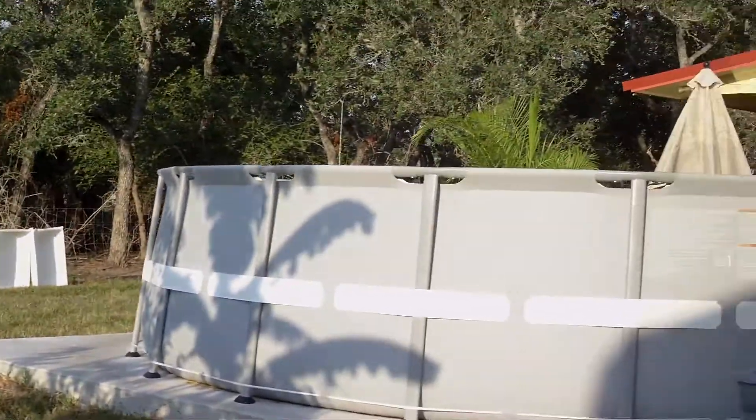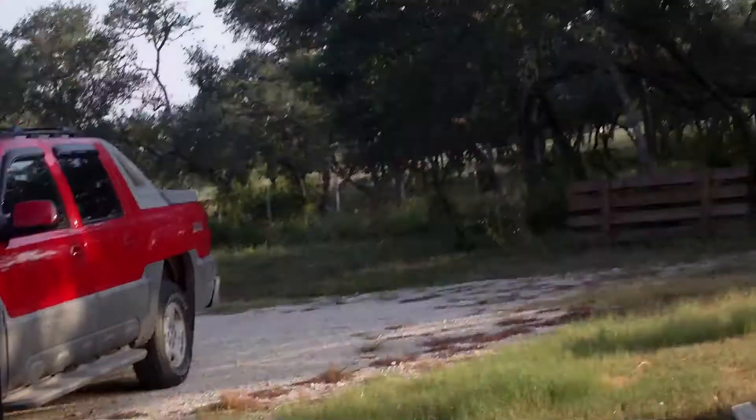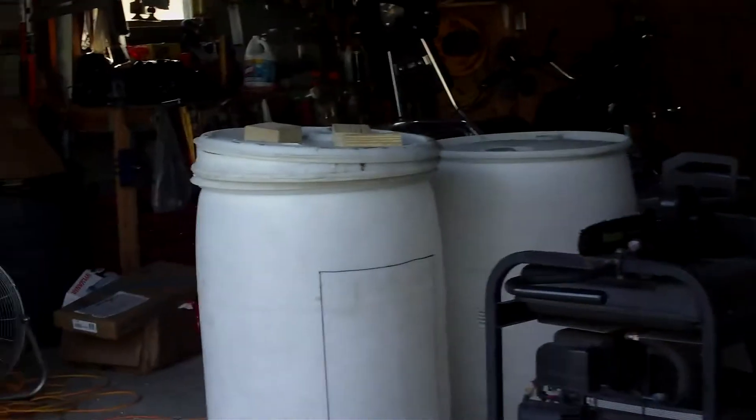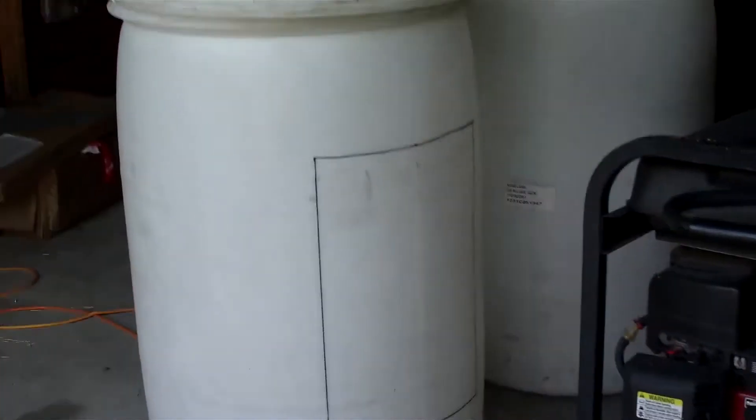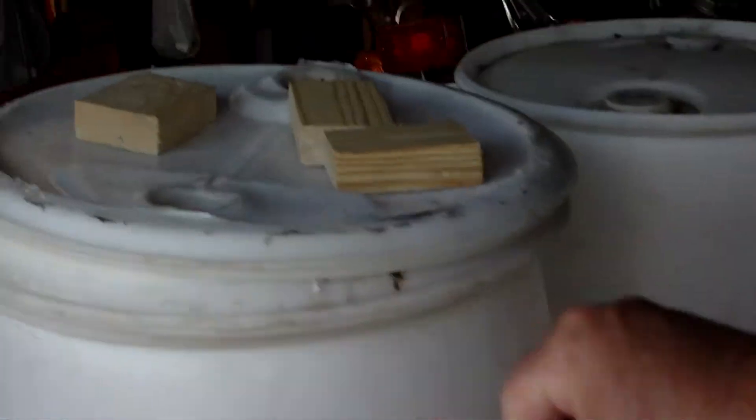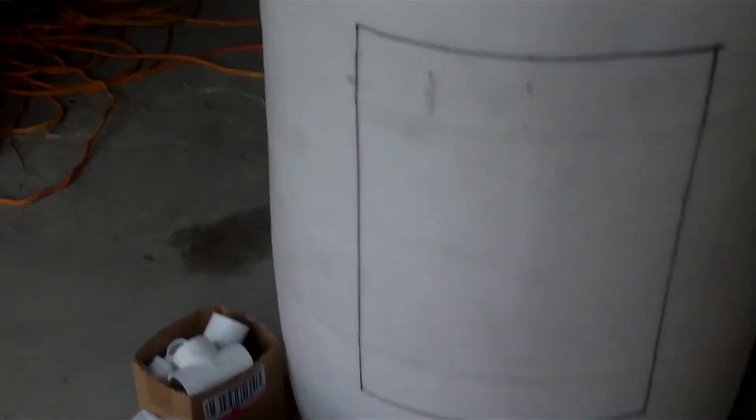And then the tanks for the drain tanks that are going to go under the grow beds are those guys right there. As you can see, I already got some lines marked where I'm going to cut it out.